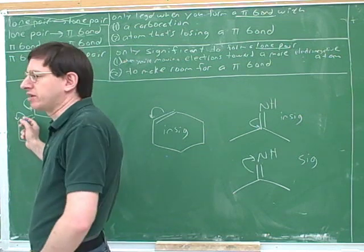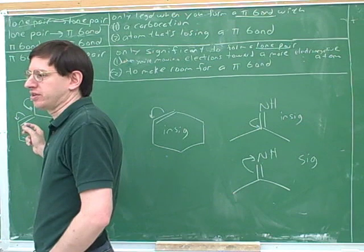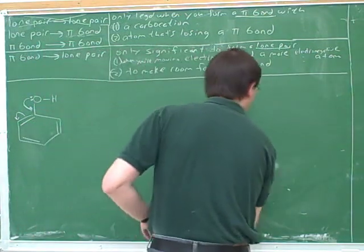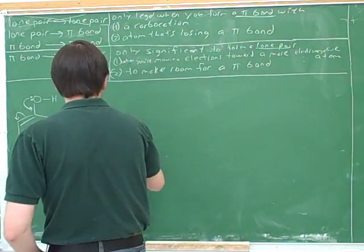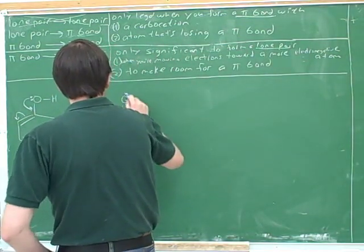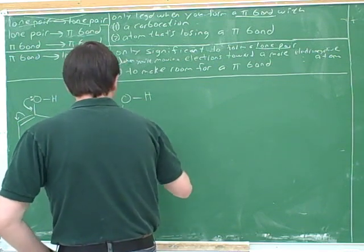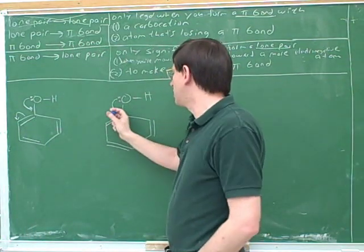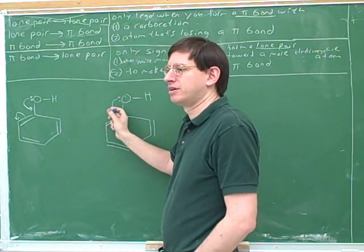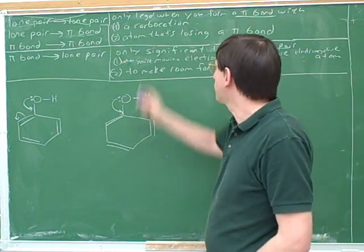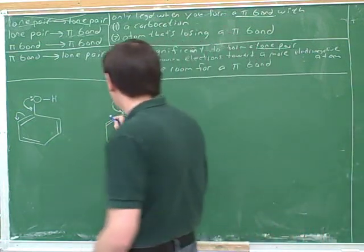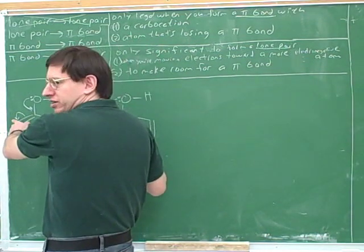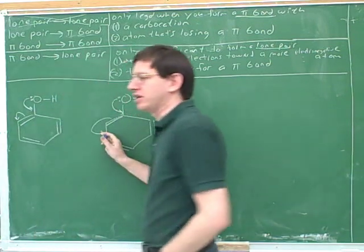So this is a significant resonance structure, but it's not the only significant one we can draw. You can't just move the pi bond straight down because then you'd have four or five bonds on one atom. One place we can move the pi bond is here, and another place is here. But is this arrow acceptable by itself? No — we can't form a pi bond unless we're also moving another pi bond.